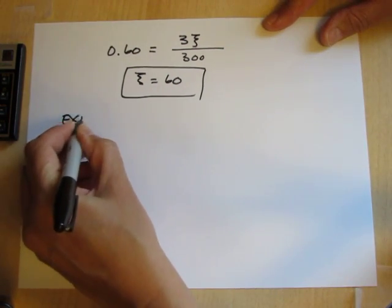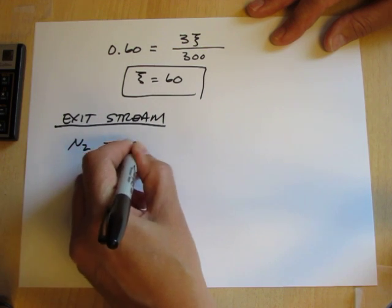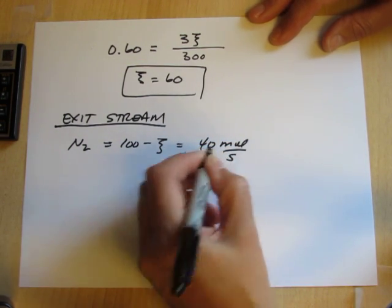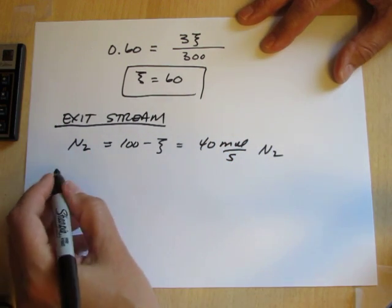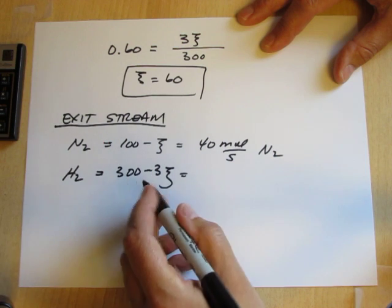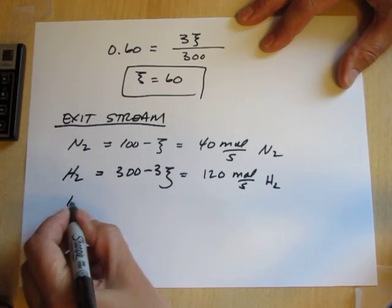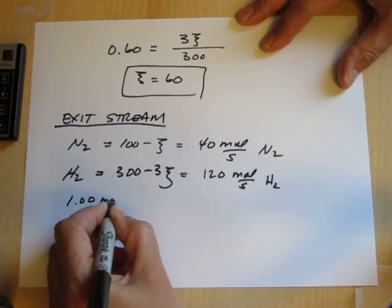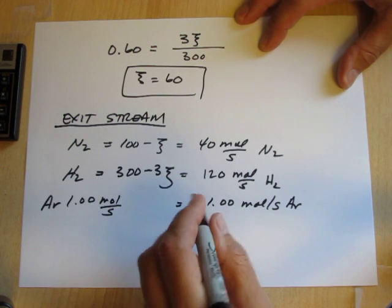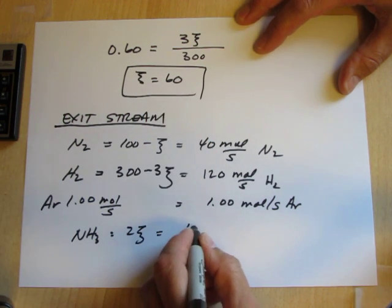We can now calculate the exit stream. For nitrogen, we had 100 minus Xi: 100 minus 60 is 40 moles per second of nitrogen. For hydrogen, we had 300 minus 3Xi: 3 times 60 is 180, so 300 minus 180 is 120 moles per second of hydrogen. Argon has no change, remaining at 1 mole per second. The amount of ammonia produced is 2 times Xi: 2 times 60 is 120 moles per second of ammonia.